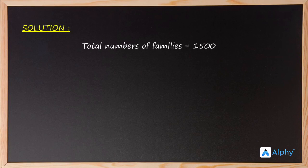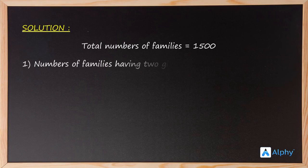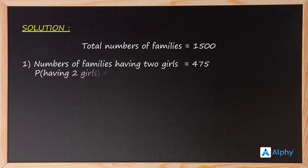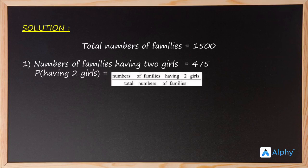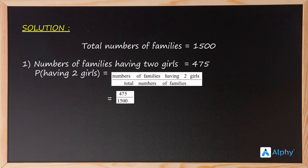The number of families having two girls is 475, obtained directly from the table. Therefore, the probability of having two girls equals the number of families with two girls divided by the total number of families, which is 475 by 1500, equal to 0.3166.